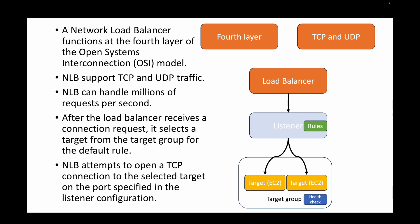Health checks are very important — they tell the load balancer whether your EC2 instances can process requests or not. Your NLB attempts to open a TCP connection to the selected targets on the port specified in the listener configuration. The load balancer receives the request, goes to the listener rules, evaluates them, and tries to open a TCP connection to the respective target groups on the specified port number.